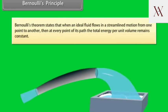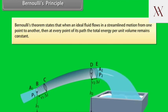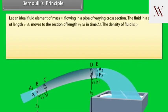Bernoulli's principle. Bernoulli's theorem states that when an ideal fluid flows in a streamlined motion from one point to another, then at every point of its path, the total energy per unit volume remains constant. Let an ideal fluid element of mass M flowing in a pipe of varying cross section.